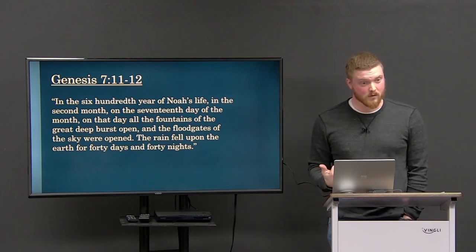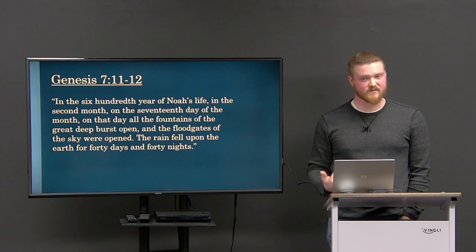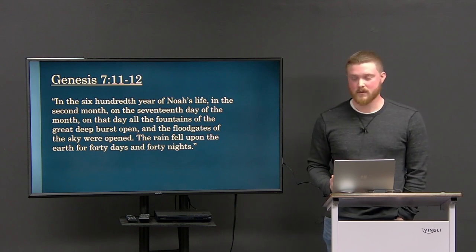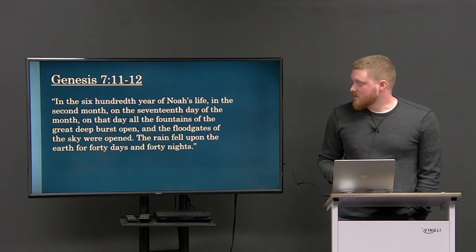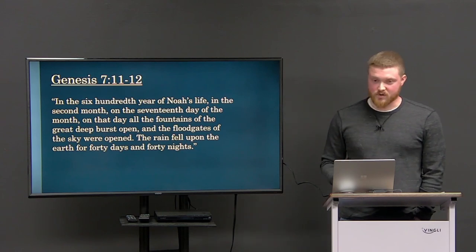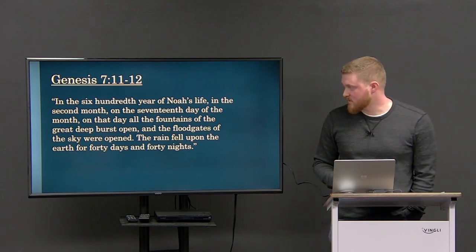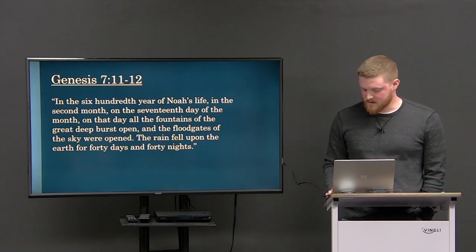So I just want to read the scope of what the flood is described as - how big, how devastating, how long. I'm going to read Genesis 7 really quick. In the 600th year of Noah's life, in the second month, on the seventh day of the month, on that day all the fountains of the great deep burst open and the floodgates of the sky were opened.